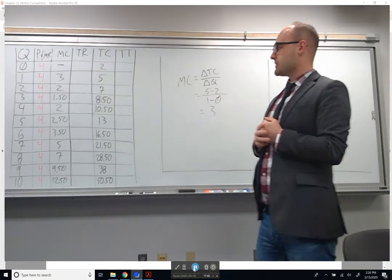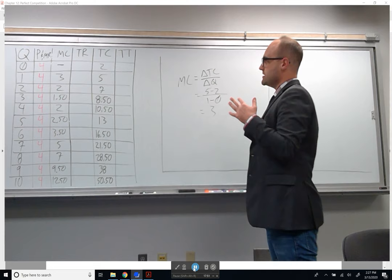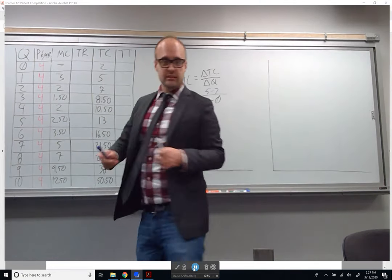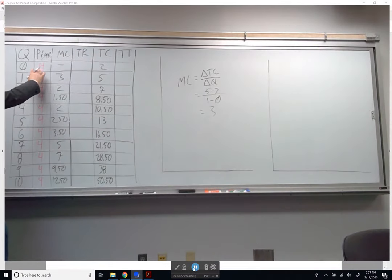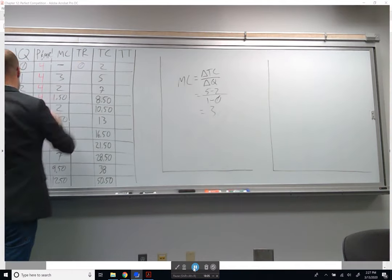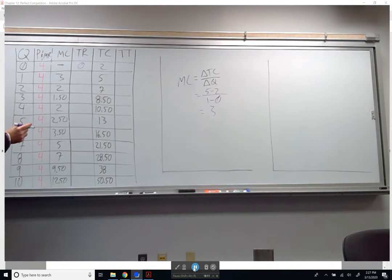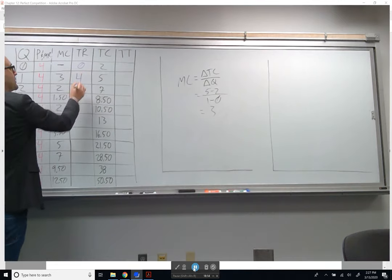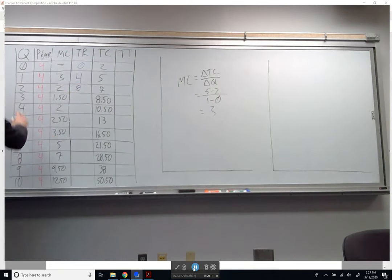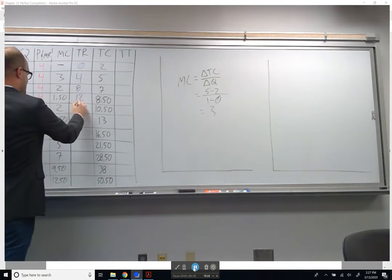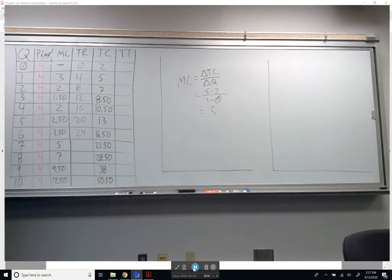We've got our marginal revenue and our marginal cost. How do we calculate total revenue? Price times quantity. So: 0 times 4 is 0, 1 times 4 is 4, 2 times 4 is 8, 3 times 4 is 12, 4 times 4 is 16, 5 times 4 is 20, 6 times 4 is 24, 7 times 4 is 28, 8 times 4 is 32, 9 times 4 is 36, 10 times 4 is 40.